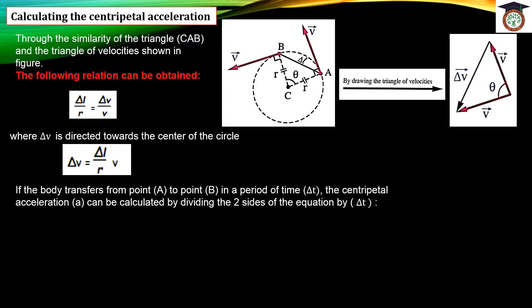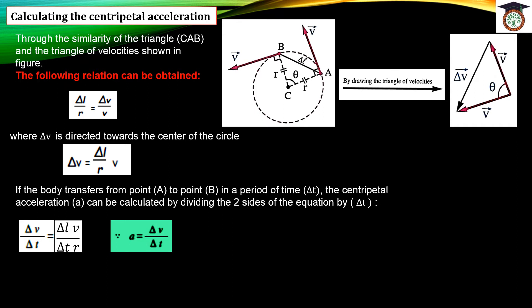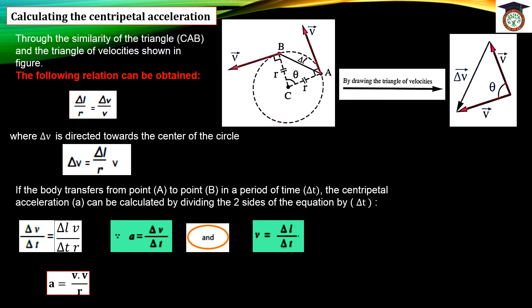If the body moves from point A to point B in a time period delta T, we can calculate centripetal acceleration by dividing both sides of the equation by delta T. So acceleration = delta V / delta T = (delta L × V) / (delta T × R). Since delta V / delta T is acceleration and delta L / delta T is velocity, we replace these to get: a = V × V / R, which gives us the final rule: a = V² / R.